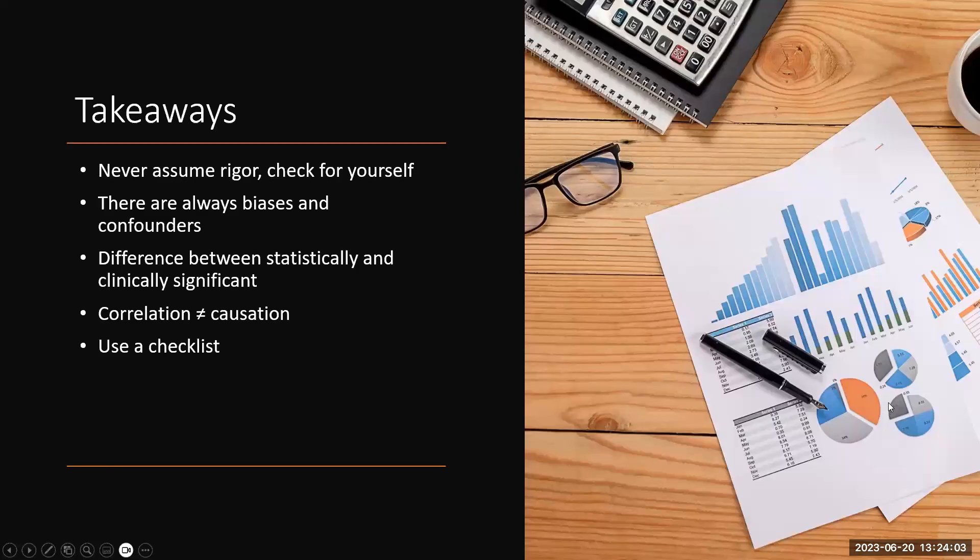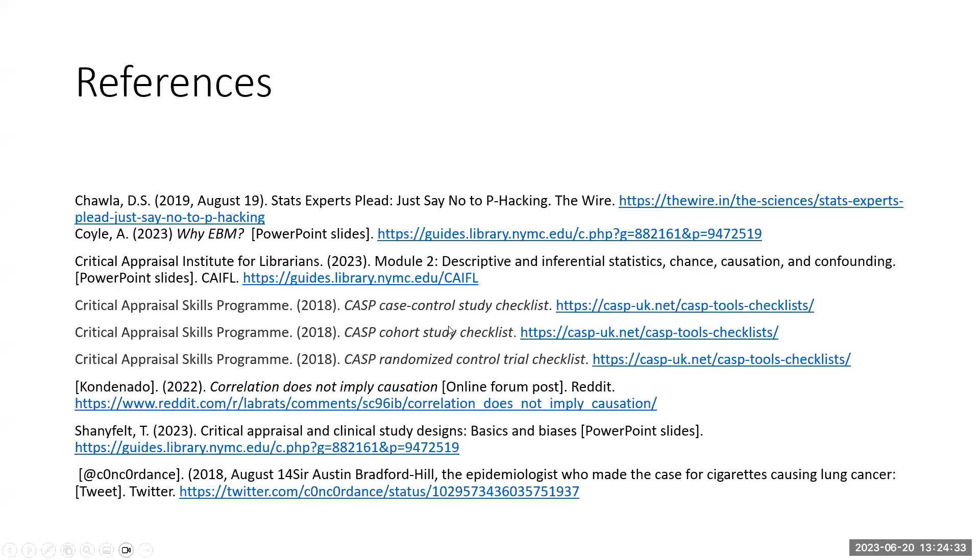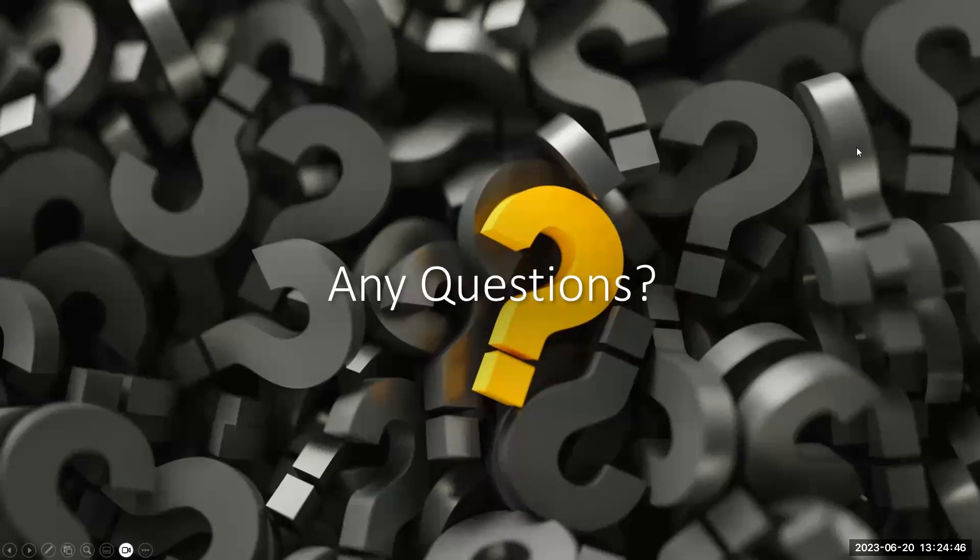Some takeaways: Don't assume somebody else rigorously went through the article, check for yourself. You can't eliminate biases and confounders. Statistically and clinically significant are different. Correlation versus causation. And use a checklist. The checklists I really like are the CASP ones, C-A-S-P, Critical Appraisal Skills Program. They have a checklist for several different study types, and they're publicly available. You can just Google them. That is my presentation. Does anybody have any questions?